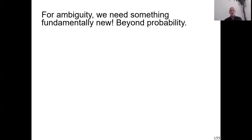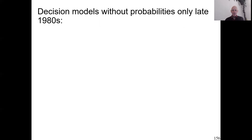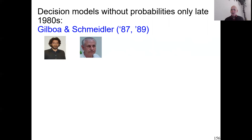For ambiguity, we can't do business as usual — we need something very new that goes beyond probability. That was really hard to invent: if you have events and no probabilities, you don't even know how to define a functional or an integral. It took a long time. Only in the late 1980s did two clever people, Kibor and Schmeidler, invent models for ambiguity. They opened up the field for decision theory. The models themselves had existed in statistics before, but they showed the preference foundation — that in decision theory it also makes sense — and only then could the field of ambiguity take off.